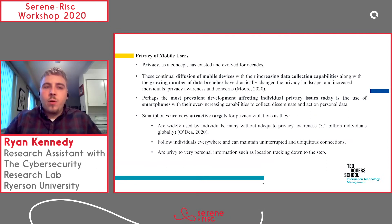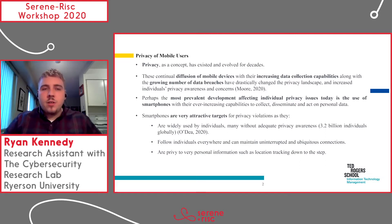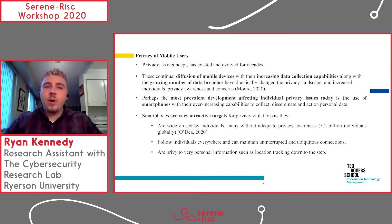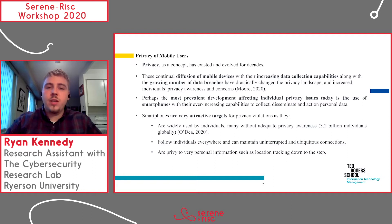Just to give a little bit of background about what this paper and project is about, it's generally about understanding the privacy concerns of mobile device users, specifically smartphones and location privacy concerns. Privacy as a concept has existed and evolved for decades. The continual diffusion of mobile devices with their increasing collection capabilities, along with the growing number of data breaches over the past few years, has changed the privacy landscape. Perhaps the most prevalent development is the use of smartphones, with their ever increasing capabilities to collect, disseminate, and act on personal data.